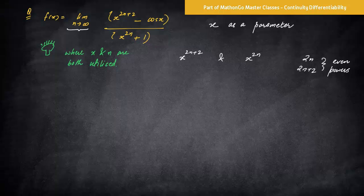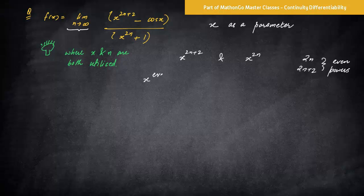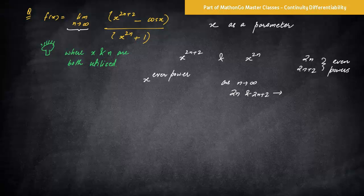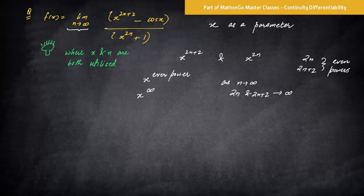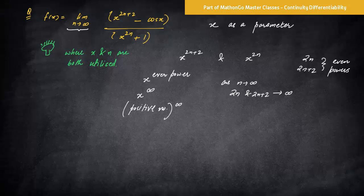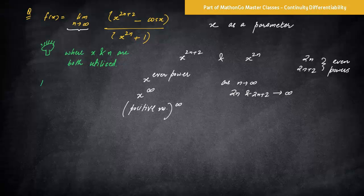So now you have x raised to even power. And as n approaches infinity, 2n and 2n plus 2 will also approach infinity. So now you have something x where it is raised to power infinity, or rather I should say a positive number because the power is even raised to power infinity. So these questions basically will check your concept of numbers, number system.